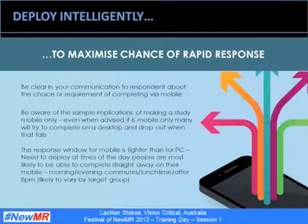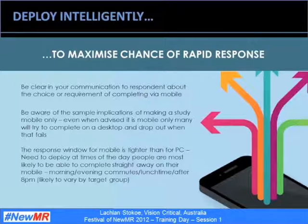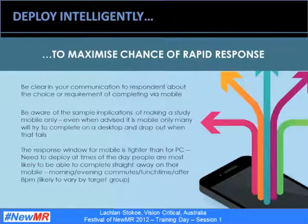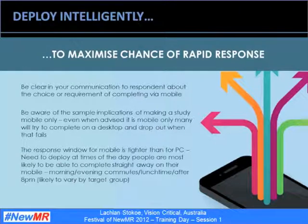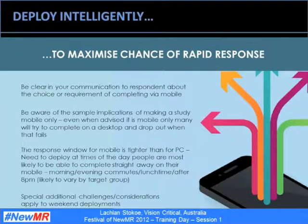The response window for mobile is tighter than for PC, so you need to deploy at times of the day when people are most likely to complete straight away or soon after receiving the email. This will vary by target group — it might be morning or evening commutes or lunchtimes for office workers, or after 8pm for busy mothers. You may need to split your deployment into multiple specially filtered deployments to reach different targets at different times of the day. Note also that there are special challenges around weekend deployments, such as people using work email addresses and then switching off completely — consider giving advance warning if sending a survey over the weekend.